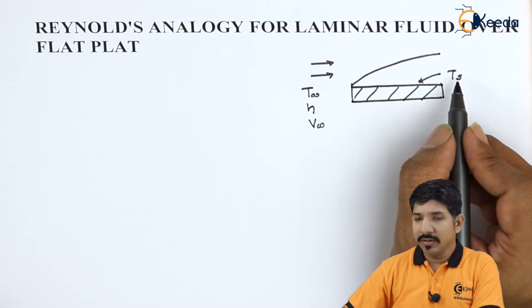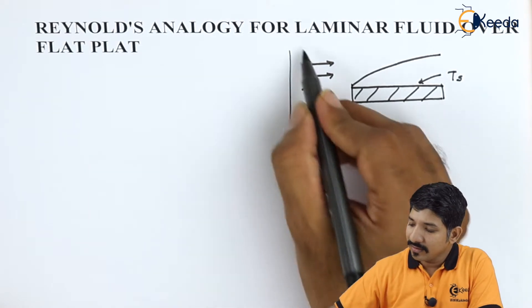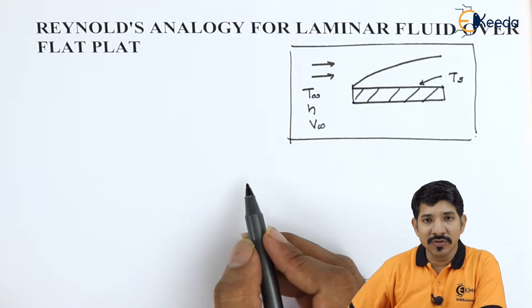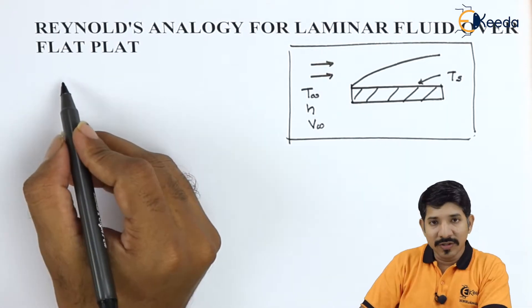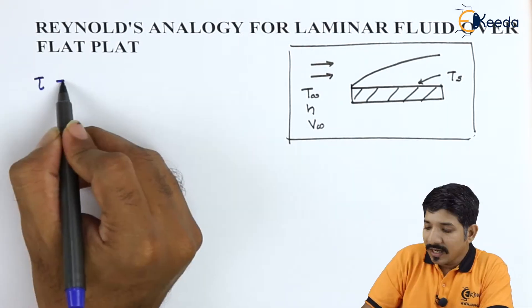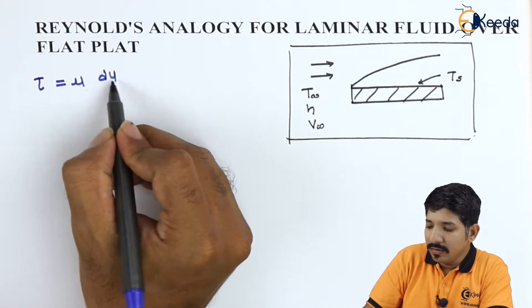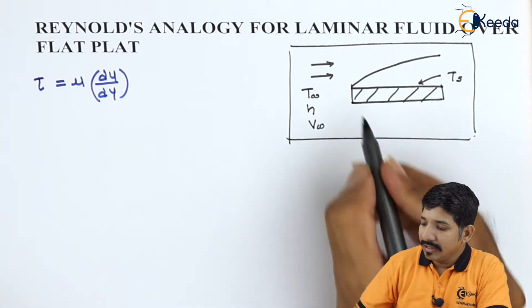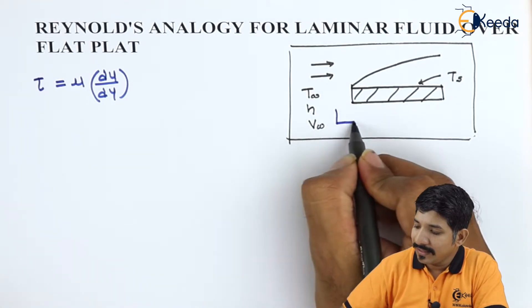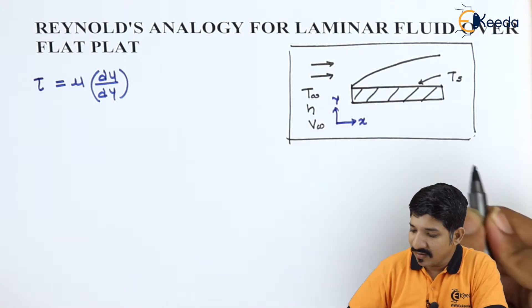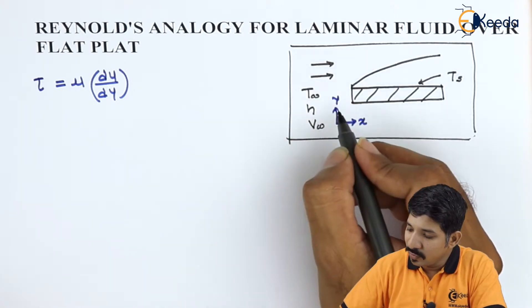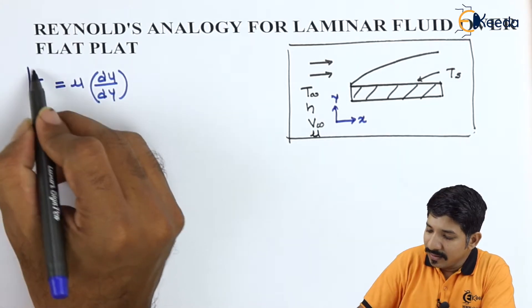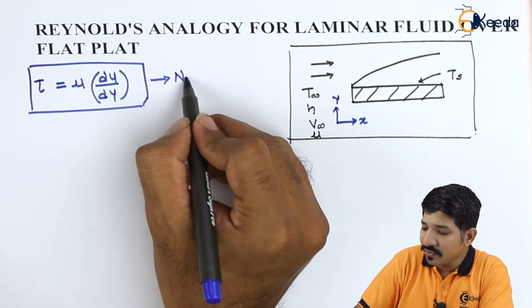Now, what do I know about the analysis? In this analysis, we are going to use Newton's law of viscosity. By Newton's law of viscosity, we can write tau is equal to mu dU by dY. Now here you can assume this is my x direction, this is my y direction, and the fluid is having viscosity as mu. So this is nothing but Newton's law of viscosity.